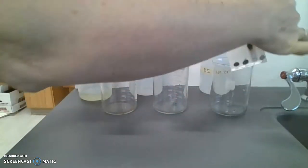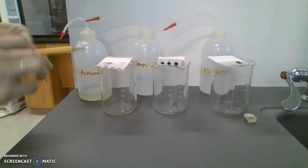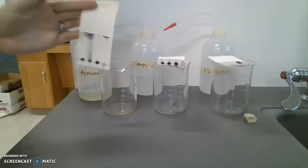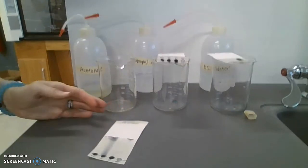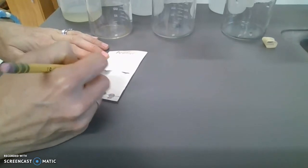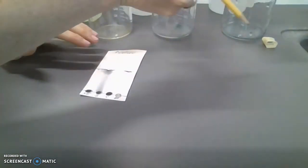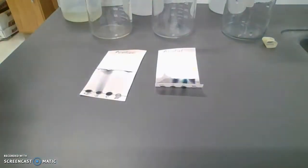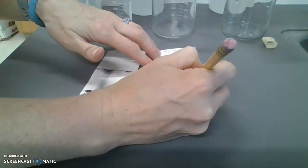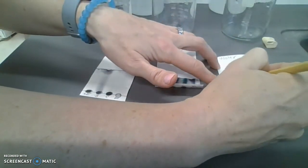And before they dry and it completely evaporates, we need to mark where the solvent front went. So if you lay it flat down on the table, you likely want to go with your pencil and make a line where your solvent made it up to. Because it won't always be visible after it dries.